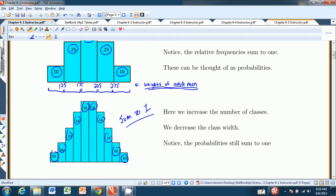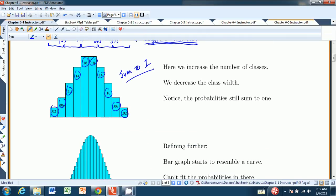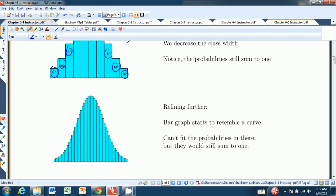And then we can refine even further. And when we refine this even further, the widths of the classes get very thin, and our histogram starts to resemble a curve. You can sort of see the curve getting started right here.